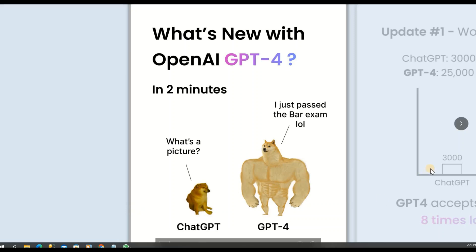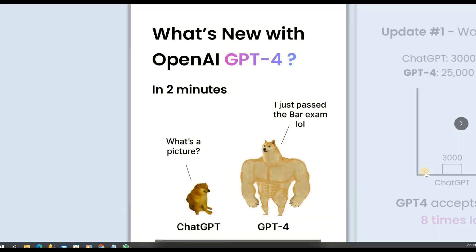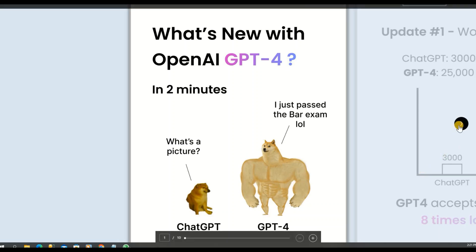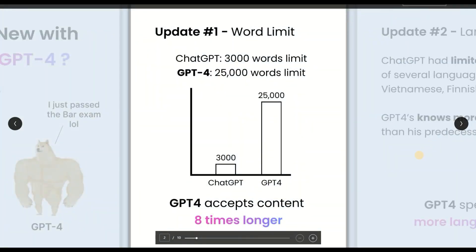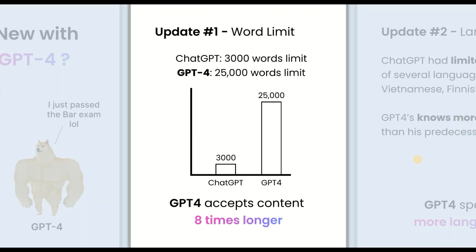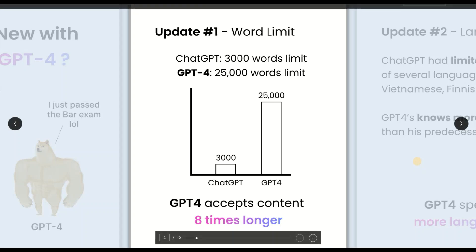Hey guys, welcome to Code Inbox Automation Lab. This is Shuffle. In this video, we're going to see what's new with ChatGPT-4. The first is the word limit — the previous version of ChatGPT used to have a 3,000 word limit, but with ChatGPT-4 it's now a 25,000 word limit. This is huge.